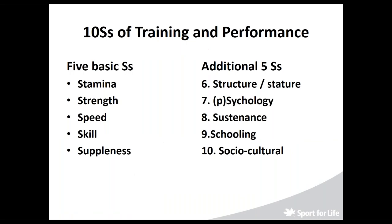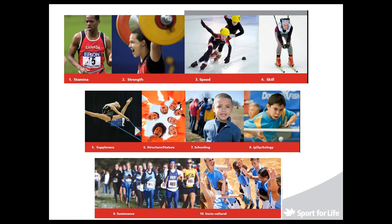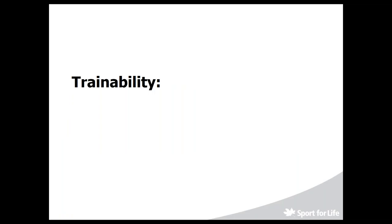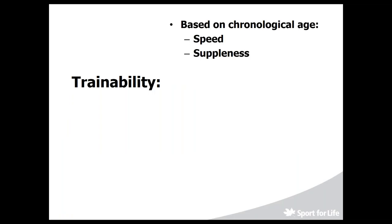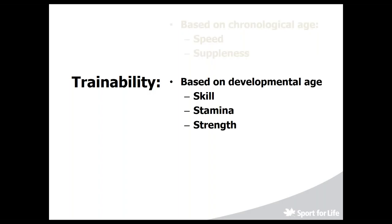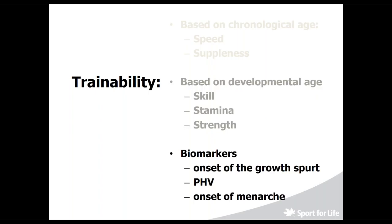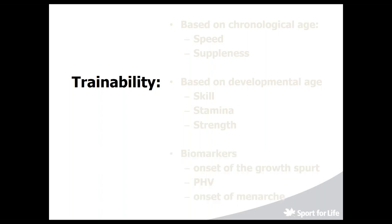Sensitive periods: the five basics are stamina/endurance, strength, speed, skill, and suppleness or flexibility, plus additional factors — structure, psychology, sustenance, schooling, and socioculture. Trainability based on chronological age covers speed and suppleness, while trainability based on developmental age covers skill, endurance, stamina, and strength. The biological markers are the onset of the growth spurt and peak height velocity (PHV), deceleration of growth, and the onset of menarche for females.